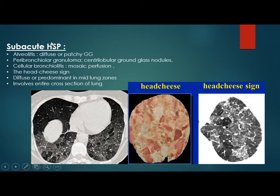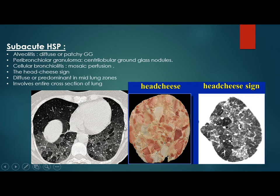The head cheese sign is characteristic for the subacute type — a combination of mosaic perfusion, air trapping, and normal lung with ground glass appearance. This disease is diffuse or predominantly in the mid-lung zones and involves the entire cross-section of the lung, not just peripheral or central. Surprisingly, it is more prominent in the lower lobes here. The expiratory film accentuates air trapping and mosaic pattern, and it looks like a crazy paving pattern.